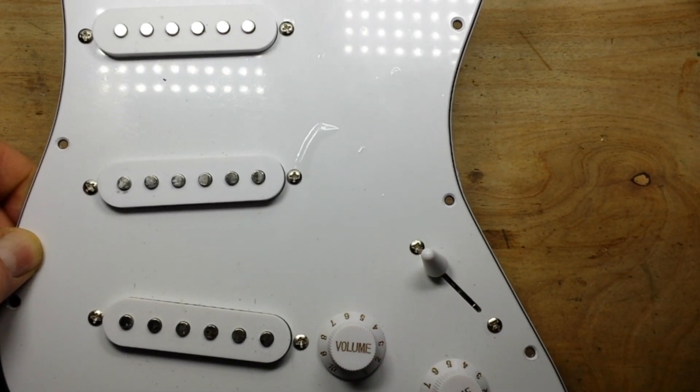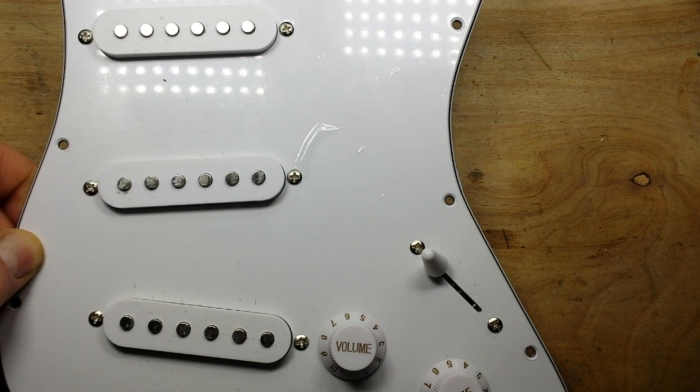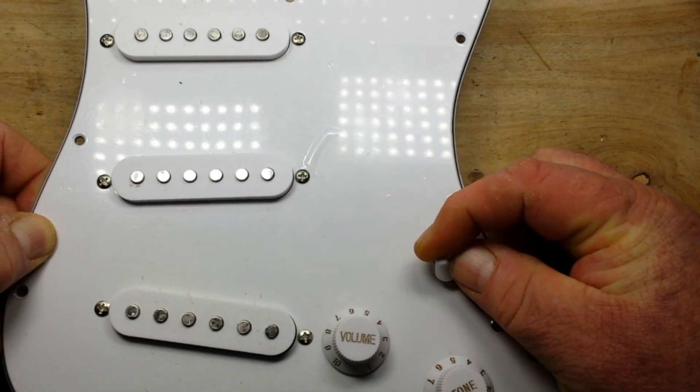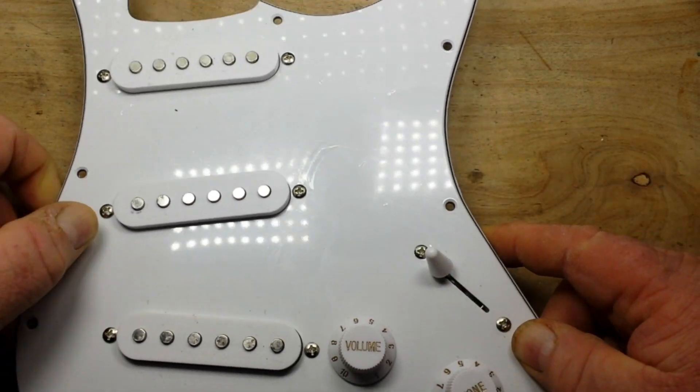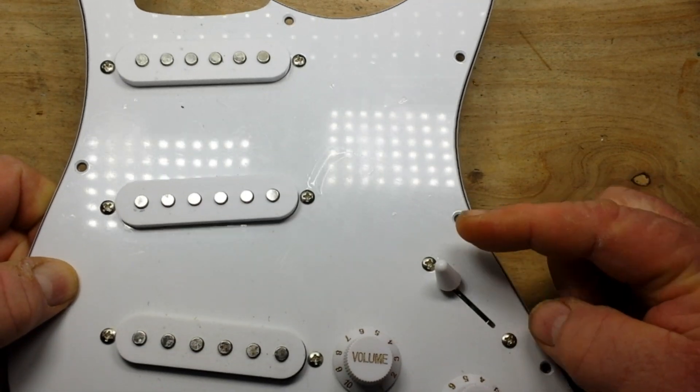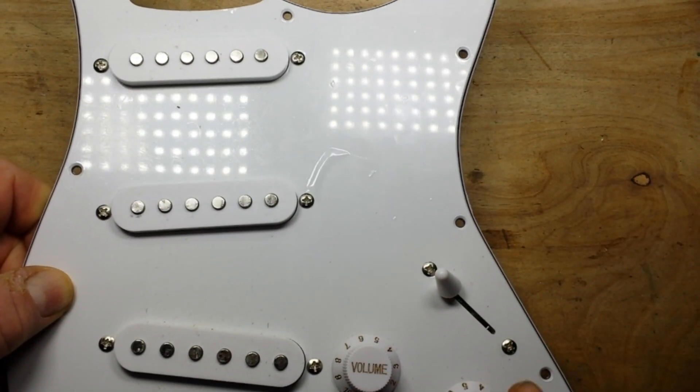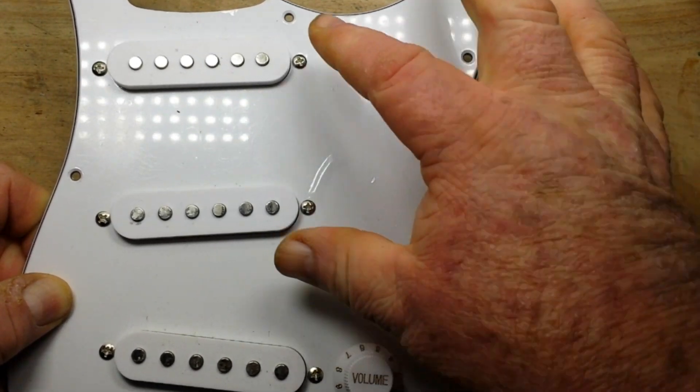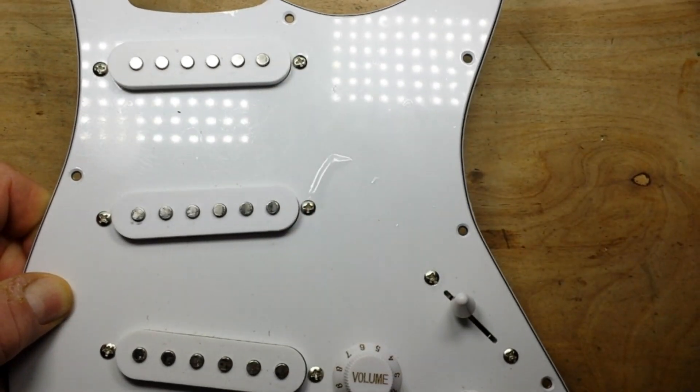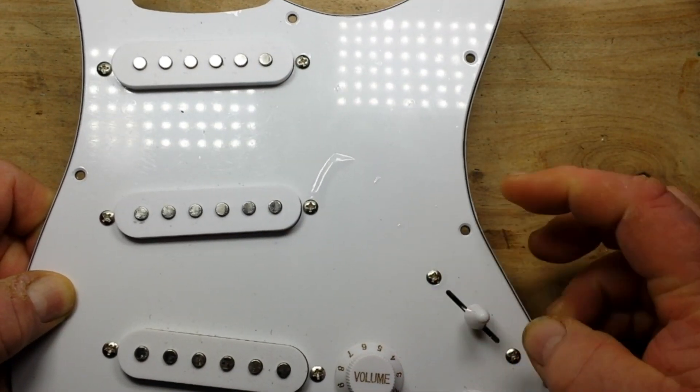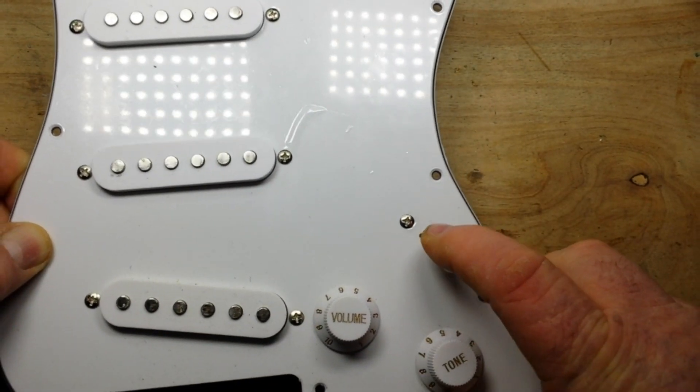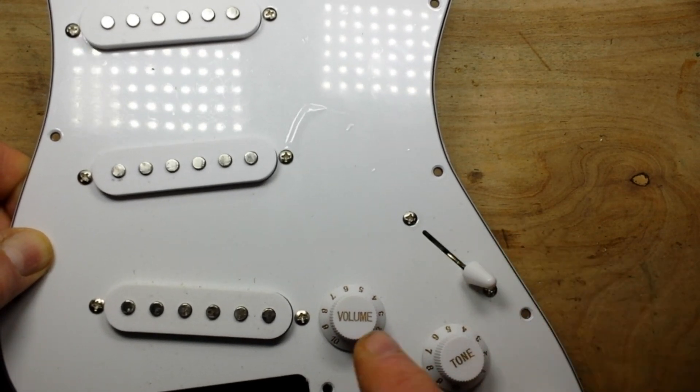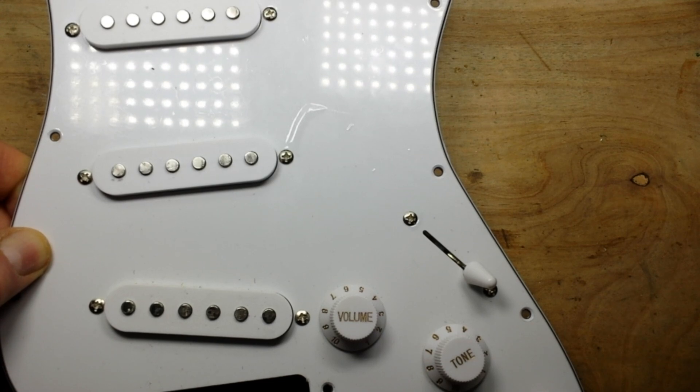And you have this selector switch which is a five-way selector switch. Originally they were only three-way selector switches, and back in the 60s folks like Jimi Hendrix found out you could kind of stick it in between positions and get two pickups to come on at the same time. So now these are five-way selector switches. This is position one: neck only. Position two: neck and middle acting as a humbucker. Position three: middle only. Position four: middle and bridge, again acting as a humbucker. And position five: bridge only.